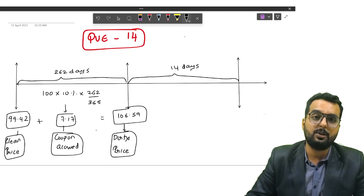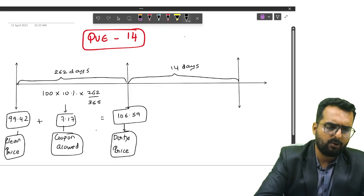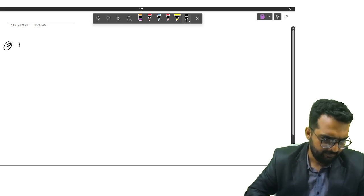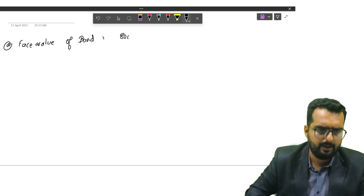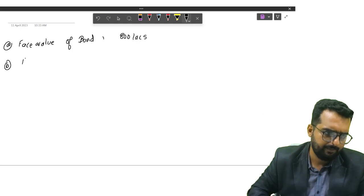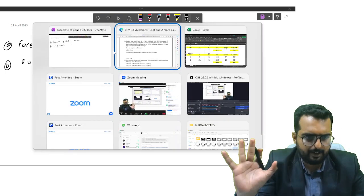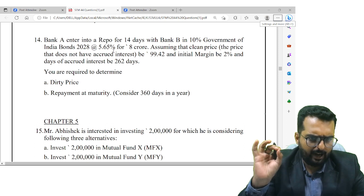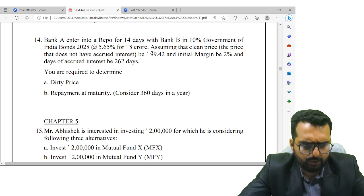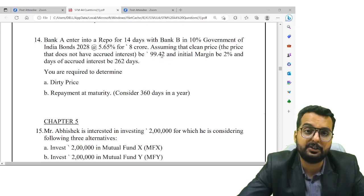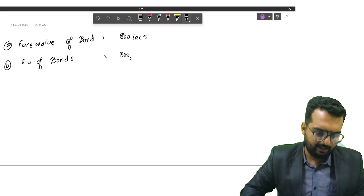So once you get the dirty price, I need to find out the loan amount. They have told they are looking at a government of India bond security for a value of 8 crore. Face value of bond is 800 lakhs. From this, can I go and find out the number of bonds? Face value is 100 because the issue price is 99.42. So the face value will be very much near to the issue price, correct? So what is 800 lakhs divided by 100 rupees? Do you get the answer as 8 lakh bonds?